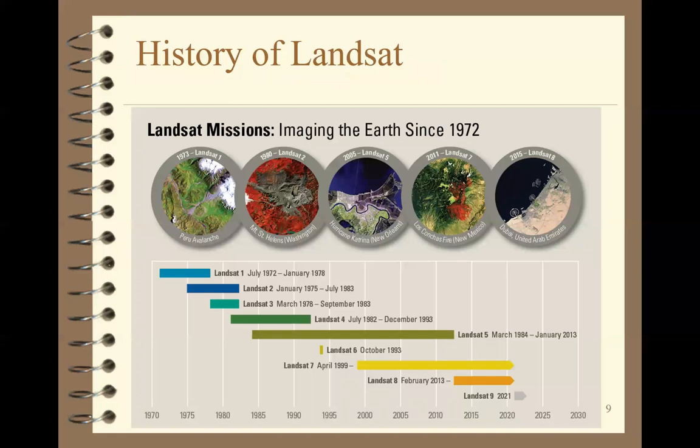We need to understand a little bit about Landsat. Landsat is the gold standard. We now have a 50-year record of imagery collected by the Landsat satellite, freely available through the U.S. Geological Survey — you can go online and download the imagery. It gives us a continuous record of the world for the last 50 years, allowing us to do temporal analysis. Other countries have launched their own satellite systems, but Landsat has been the gold standard for a long time.